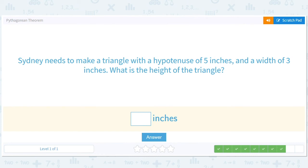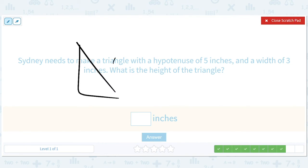Sydney needs to make a triangle with a hypotenuse of 5 inches and a width of 3 inches. What is the height of the triangle? Hypotenuse is 5, width is 3. The height is 3, 4, 5. So the height is 4.